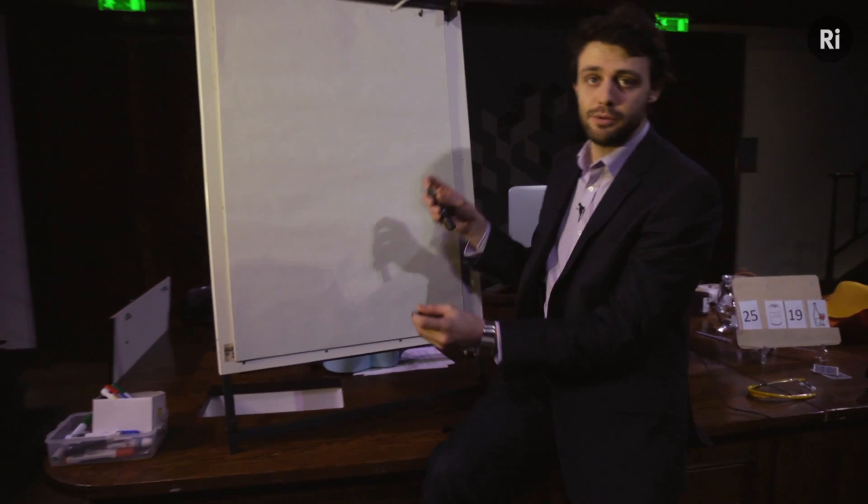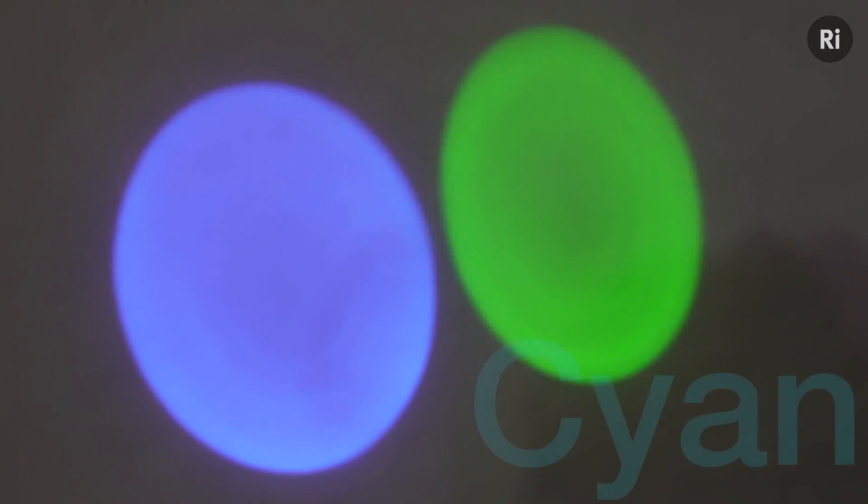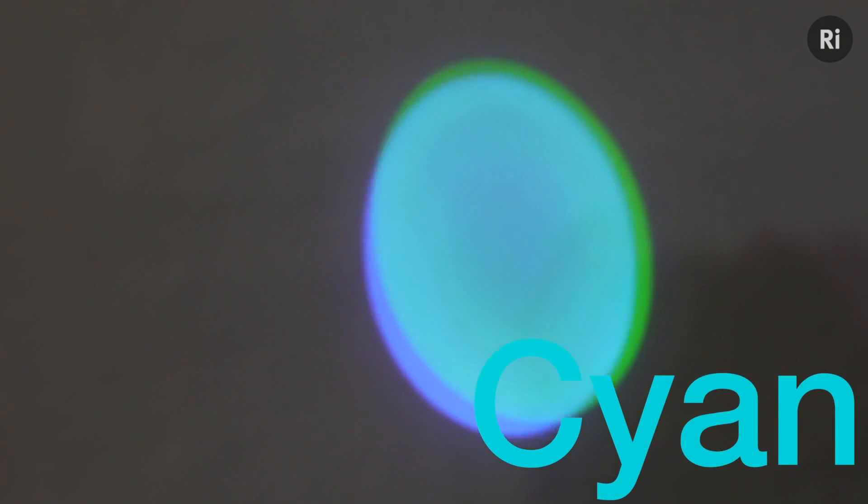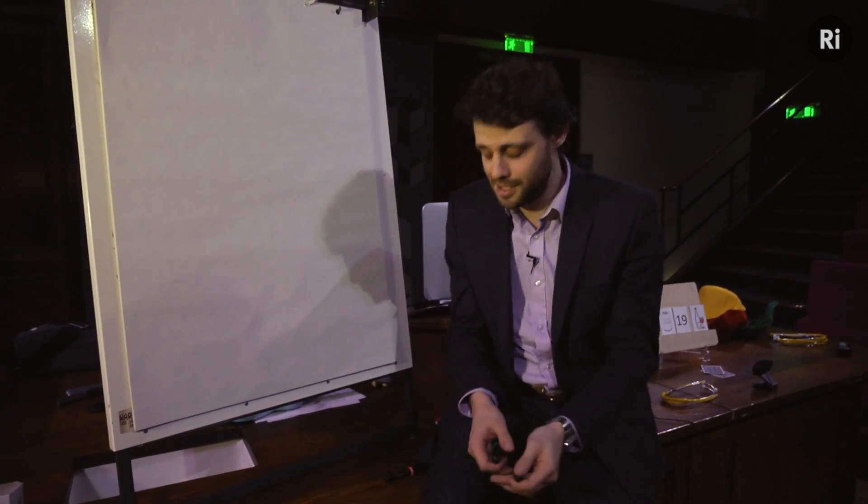If you look at the spectrum, yellow is in between red and green. So maybe that's the rule for mixing colors together: you mix two colors, you get the color in between on the color spectrum. We can test that again with green and blue. If I mix green and blue together, I get cyan, and cyan is in between blue and green on the spectrum. So that's great - you mix two colors together, you get the color in between.